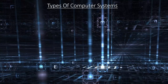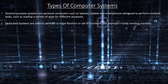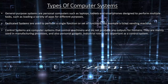Types of computer systems. General purpose systems are personal computers such as laptops, tablets and smartphones, designed to perform multiple tasks such as loading a variety of apps for different purposes. Dedicated systems are used to perform a single function or set of functions, for example a ticket vending machine. Control systems are computer systems that control machinery and do not produce any outputs for humans.